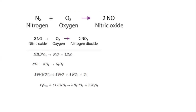Nitrogen oxides are formed by several reactions. For example, nitrogen burned in oxygen forms nitric oxide, and excess oxygen forms nitrogen dioxide. Similarly, nitric oxide and nitrogen dioxide react to form nitrogen dioxide. The lead nitrate produces nitrogen dioxide, and phosphorus pentoxide with nitric oxide produces dinitrogen pentoxide.